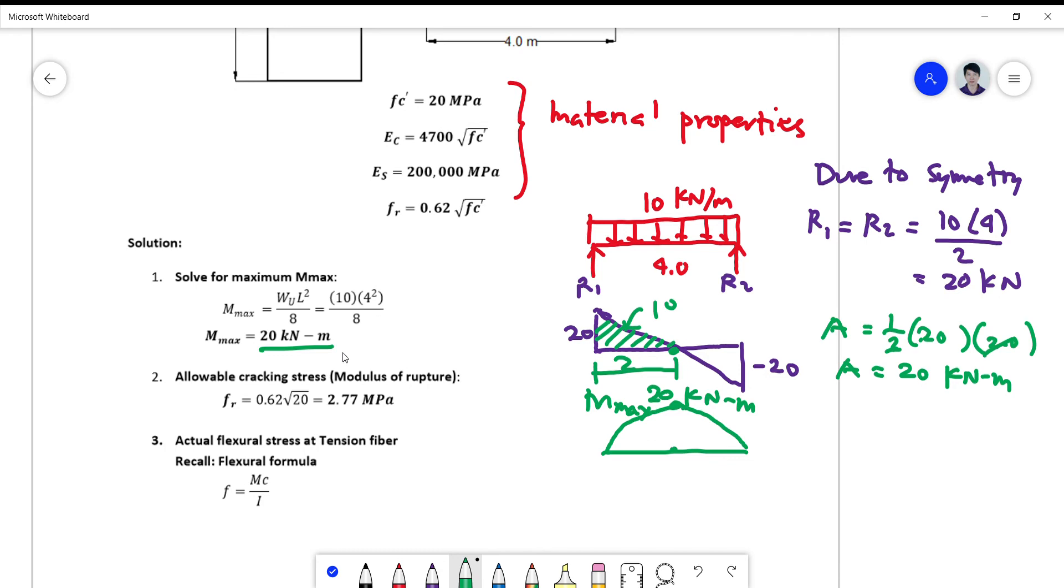The second step now is to solve for the modulus of rupture or the cracking stress. The cracking stress and the modulus of rupture are just the same. So from the formula that I showed you a while ago on the first video, fr is equal to 0.62 square root of fc prime. So this is your fc prime which is 20, so your stress now becomes 2.77 megapascal.